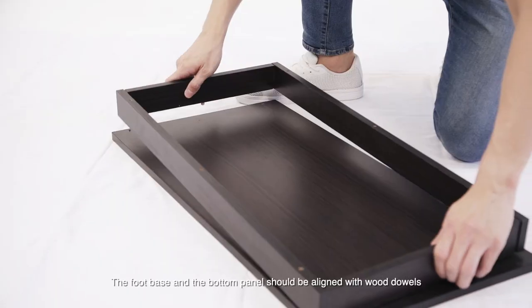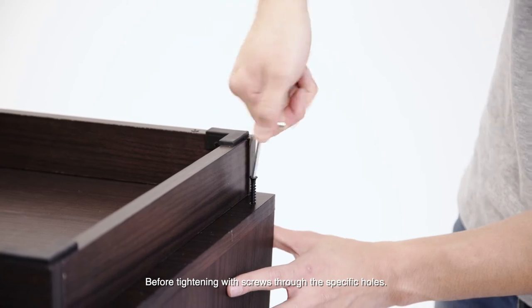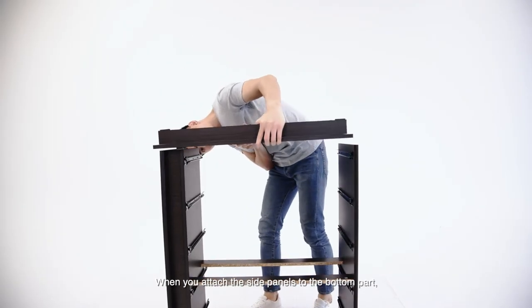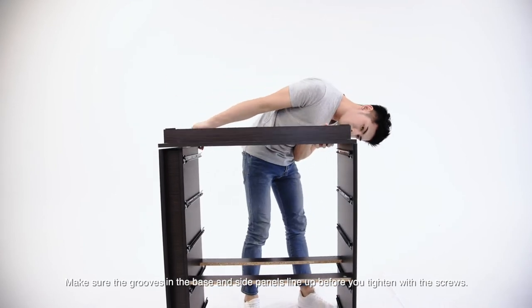The foot base and the bottom panel should be aligned with wood dowels before tightening with screws through the specific holes. When you attach the side panels to the bottom part, make sure the grooves in the base and side panels line up before you tighten with the screws.